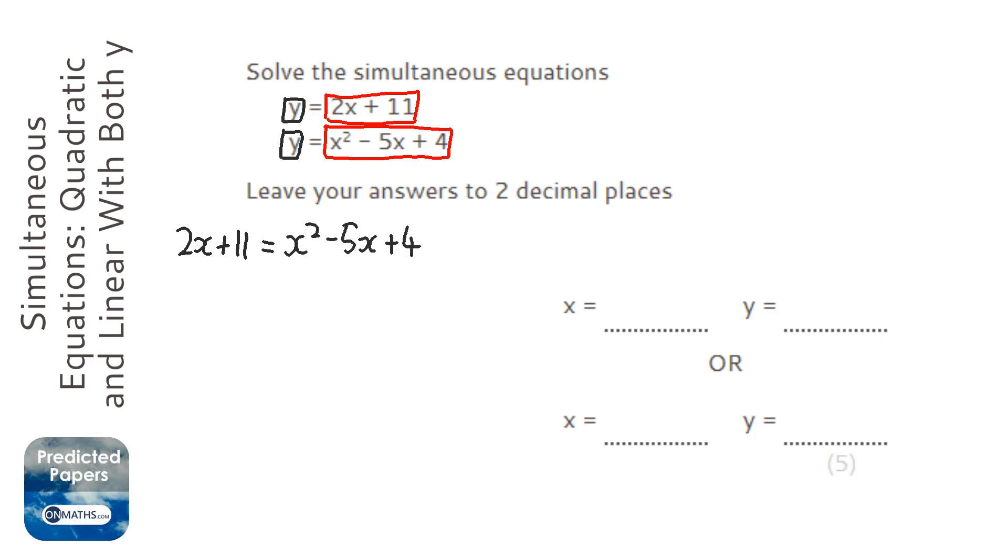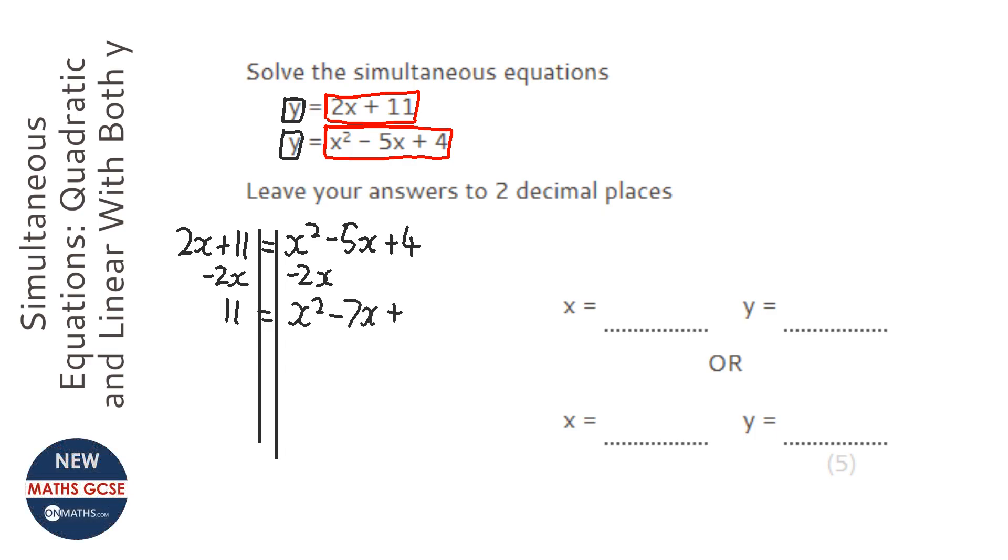Now, we can get them equal to each other because y, if we're solving, y is exactly the same thing. So we're just getting them equal to each other because they both equal y. And then we need to move that around so that we have y equal to 0. So we're going to take away 2x both sides. So we've got 11 equals x squared minus 7x plus 4. And we're going to take away 11 both sides.